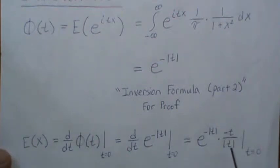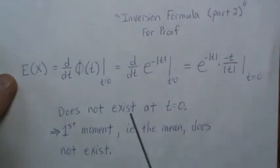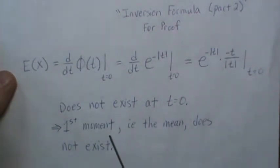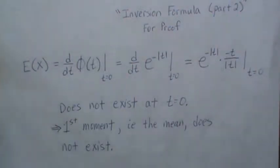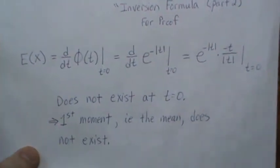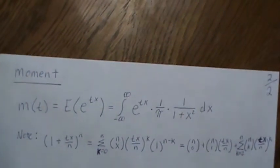When you plug in 0, this becomes undefined, so the first moment does not exist at t=0. That implies the first moment, i.e. the mean, does not exist. We know the Cauchy distribution doesn't have a mean, and this verifies it - it blows up.